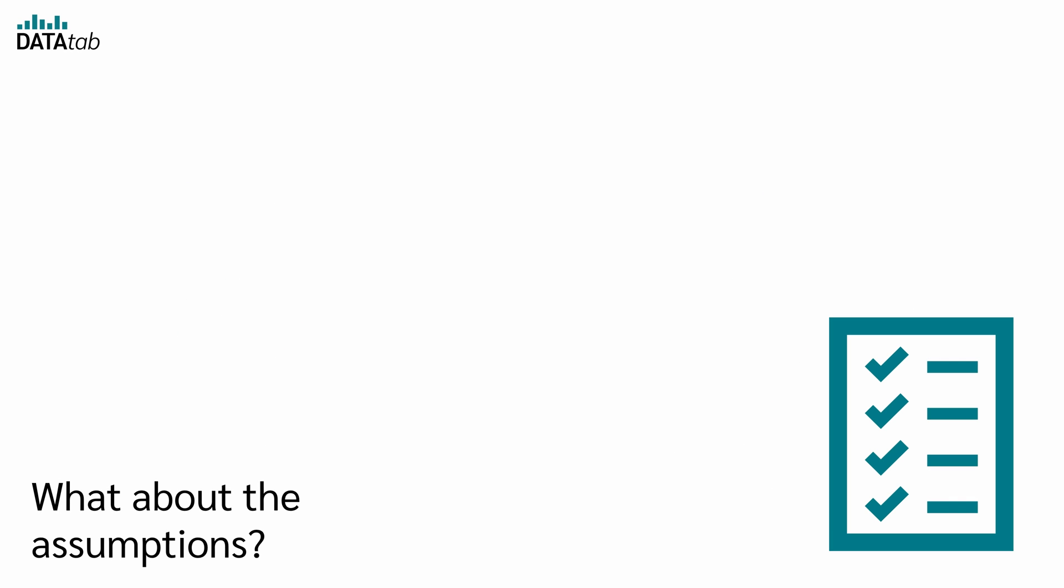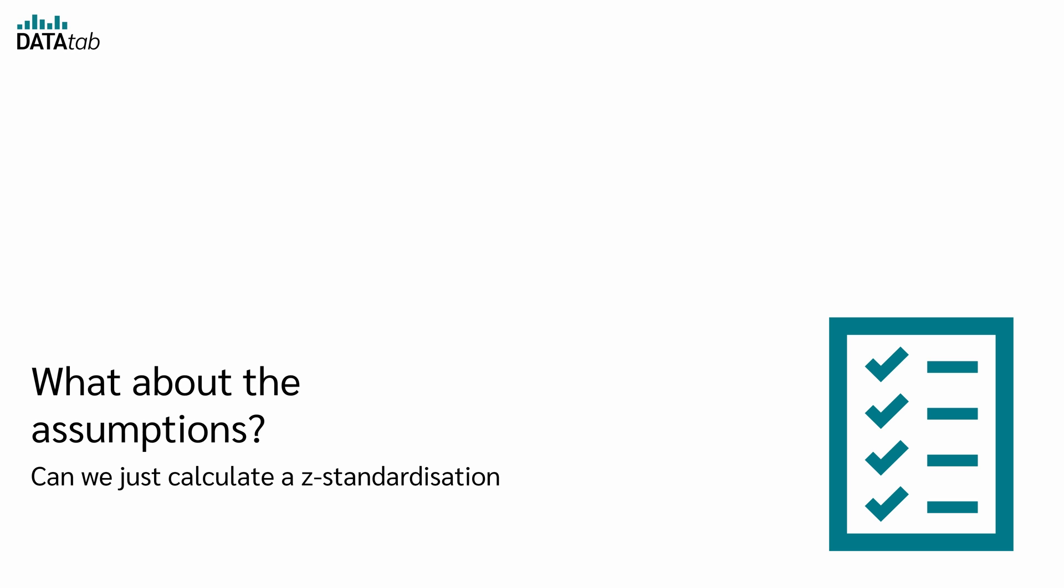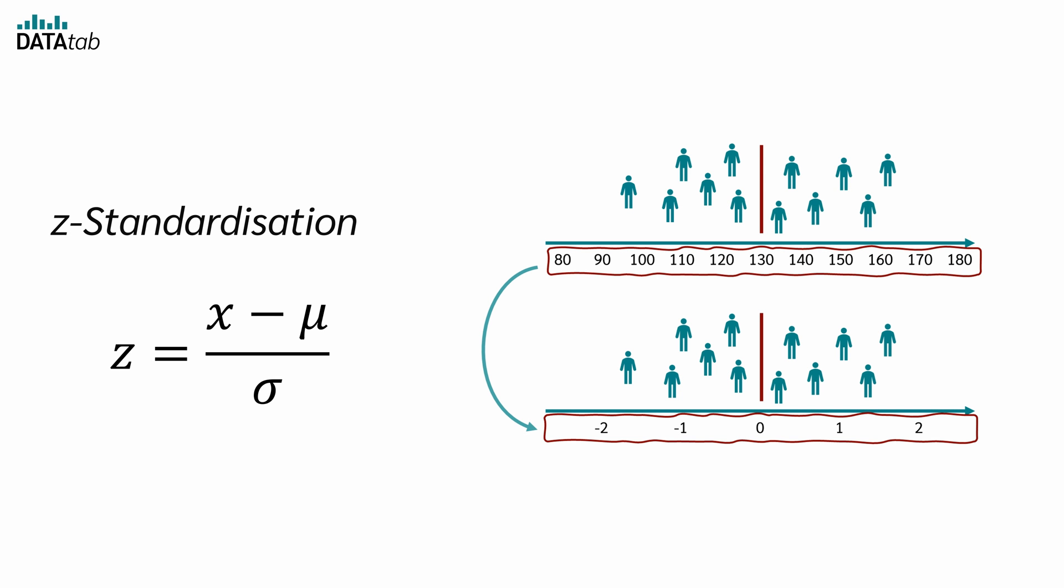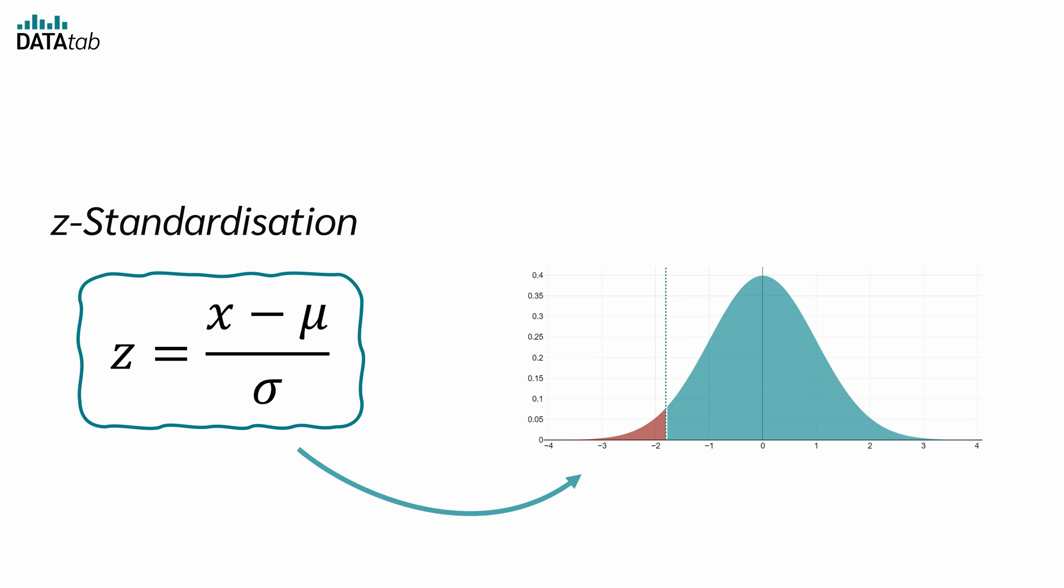But what about the assumptions? Can we just calculate a z-standardization and use the table with the normal distribution? The z-standardization itself, i.e. the conversion of data points into z-scores using this formula, has essentially no strict assumptions. This procedure can be performed regardless of the distribution of the data. However, if we use the resulting z-scores in the context of the standard normal distribution for statistical analysis, e.g. for hypothesis tests or confidence intervals, certain assumptions must be met.